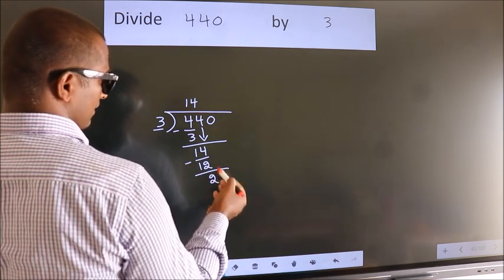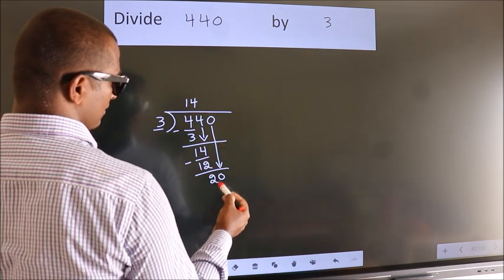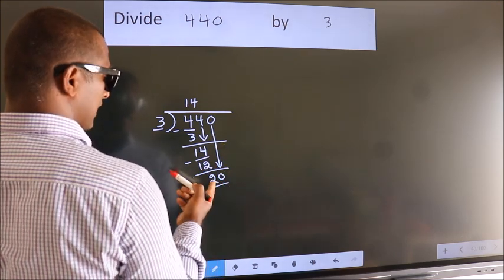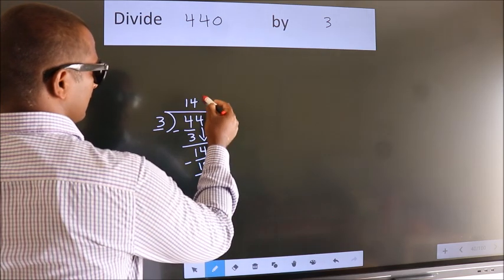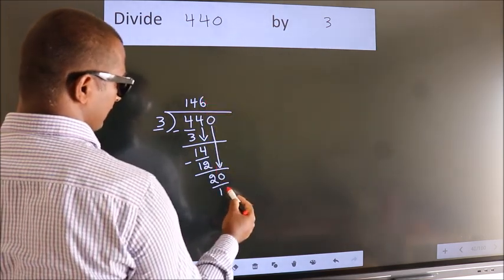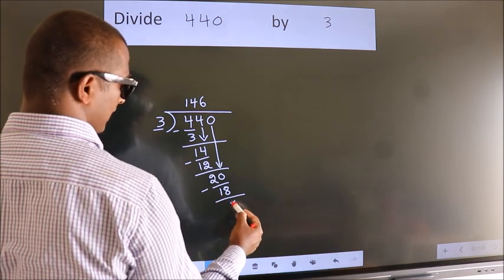After this bring down the beside number. So 0 down, so 20. A number close to 20 in 3 table is 3 6s 18. Now we subtract. We get 2.